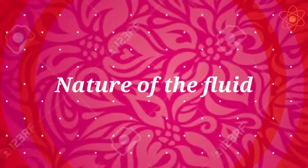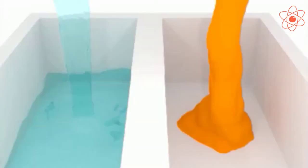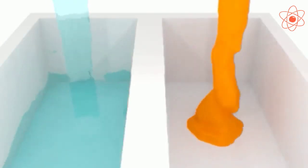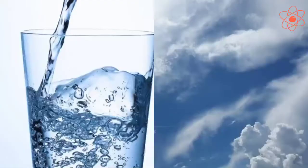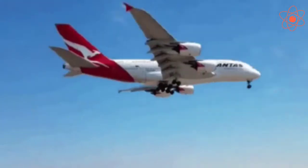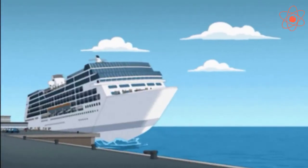Third — nature of the fluid. Higher the viscosity or thickness of a fluid, greater will be the frictional force acting on an object moving through it. For example, water is thicker than air, so there is more friction in water compared to air. This is why aeroplanes move faster than ships.